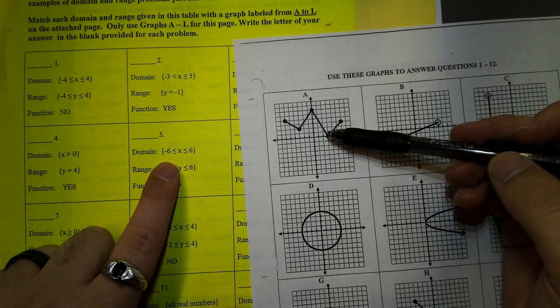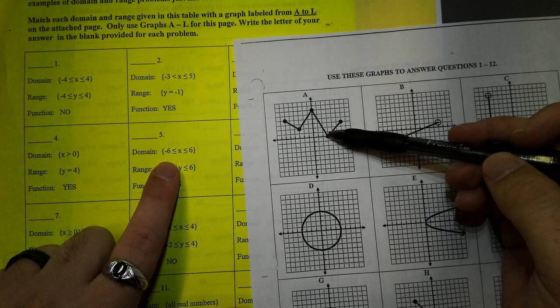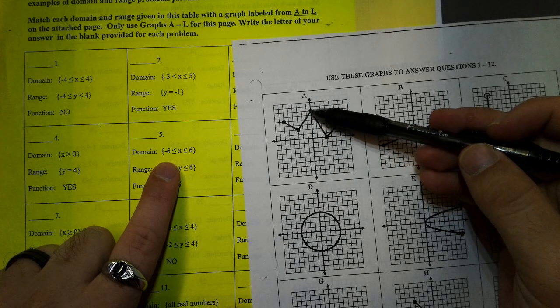So the range is up and down. The lowest point is at 0 and the highest point is at 1, 2, 3, 4, 5, 6.